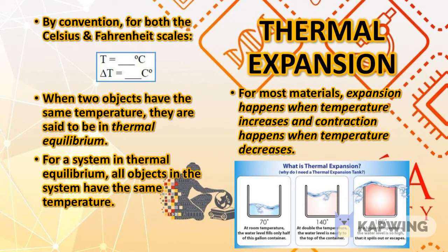When two objects have the same temperature, they are said to be in thermal equilibrium. For a system in thermal equilibrium, all objects in the system have the same temperature. Now we move on to thermal expansion.